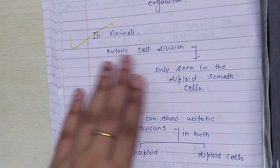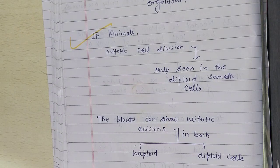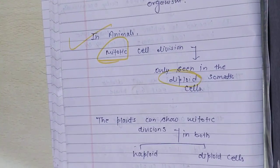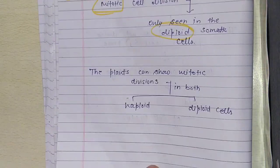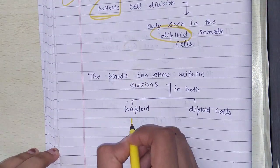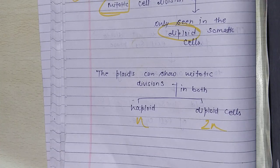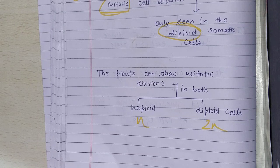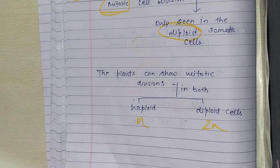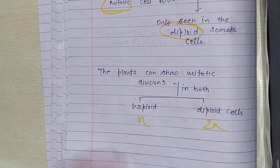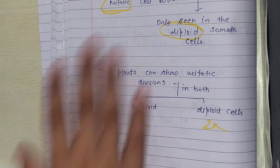In animals, mitotic cell division is only seen in diploid somatic cells. However, plants can show mitotic division in both haploid and diploid cells. Examples of haploid and diploid plant cells can be understood from Chapter 3 on Plant Kingdom.